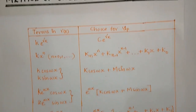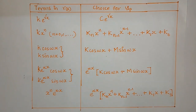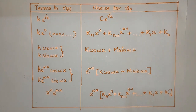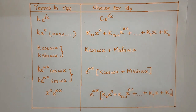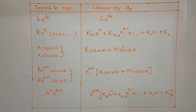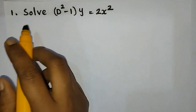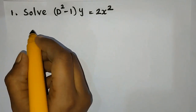Now, we have to go directly to the table. This table will be the same. Now, first solution: solve (D² - 1)y equal to 2x².